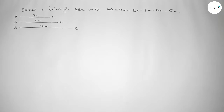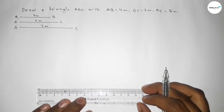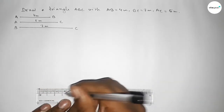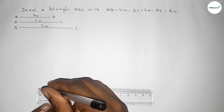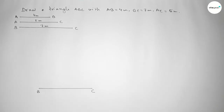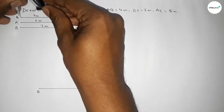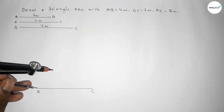Now we draw a line of length 7 centimeters as the base. This is the 7-centimeter line. We take point B at one end and point C at the other end. Now taking the length AB equal to 4 centimeters using the compass.